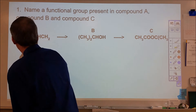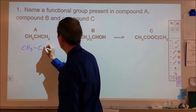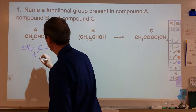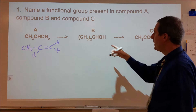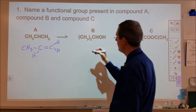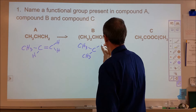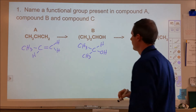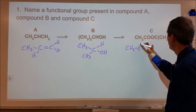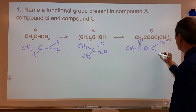In compound A, we have a CH3 bonded to a carbon, with one hydrogen and two here, which indicates that we have a unit of unsaturation. In compound B, we have two CH3 groups attached to a carbon with a hydroxyl group — so CH3 bonded to a carbon, bonded to another CH3, bonded to a hydrogen, bonded to an OH group. And then in compound C, we have a CH3 bonded to a carbon with a double bond oxygen, single bond oxygen, to a carbon, to a CH3, to a CH3.